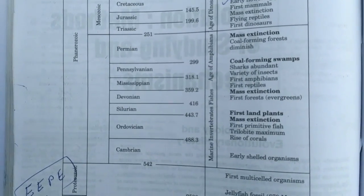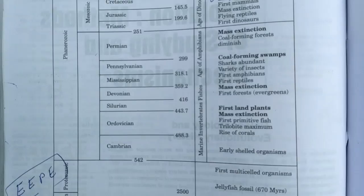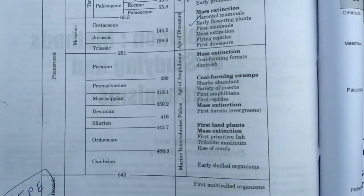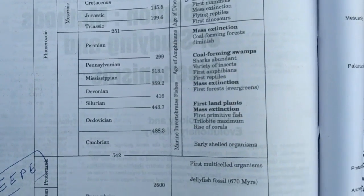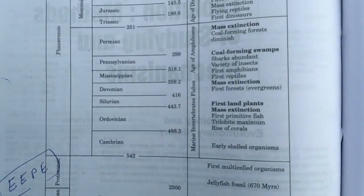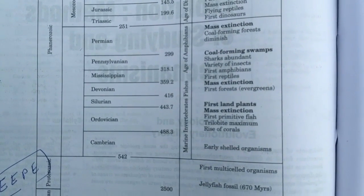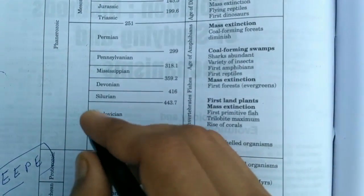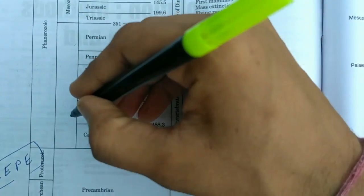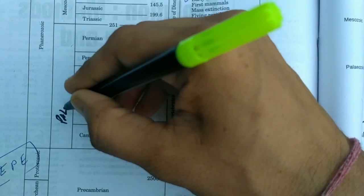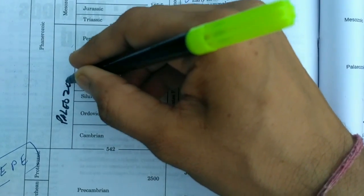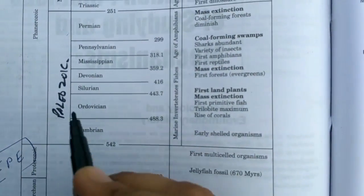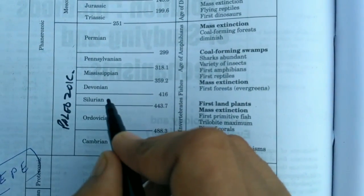It can be regarded as the largest eon. It tells us about the complex life forms. Here is the Paleozoic era, and there are coming the periods: Cambrian, Ordovician, Silurian, Devonian, Mississippian, Pennsylvanian, and Permian.